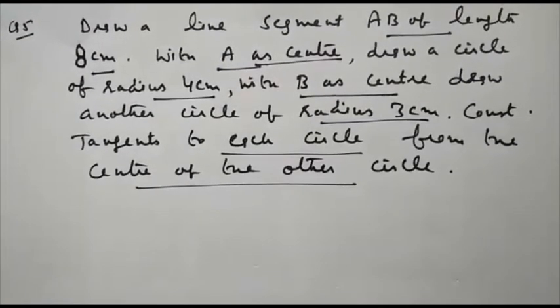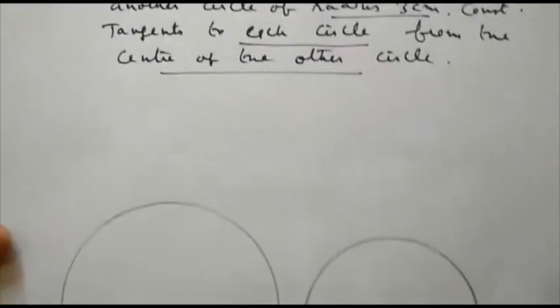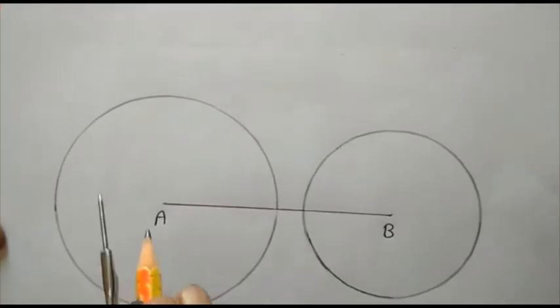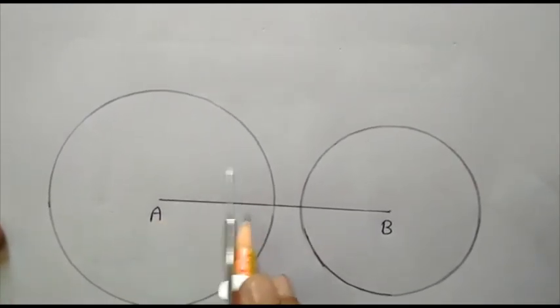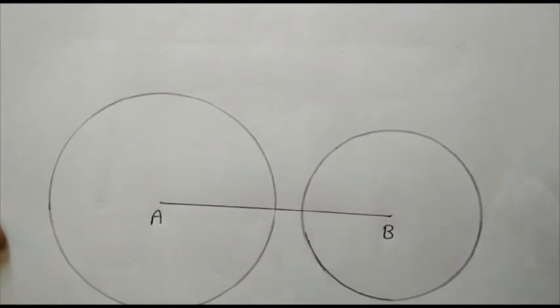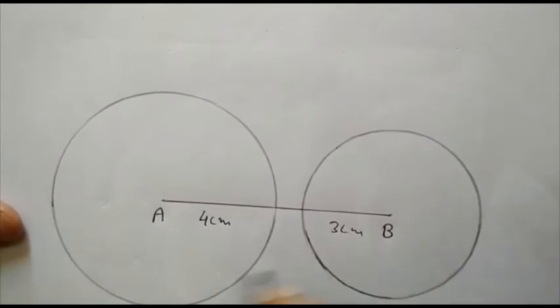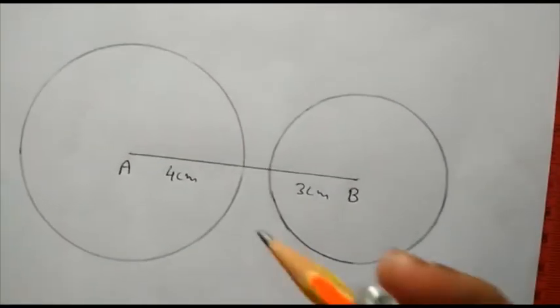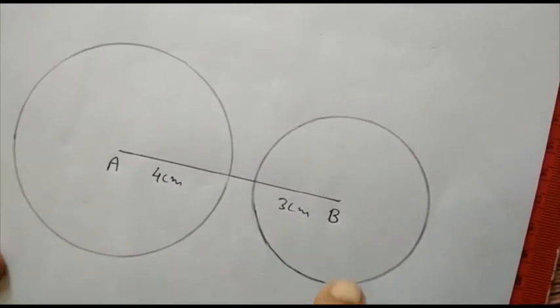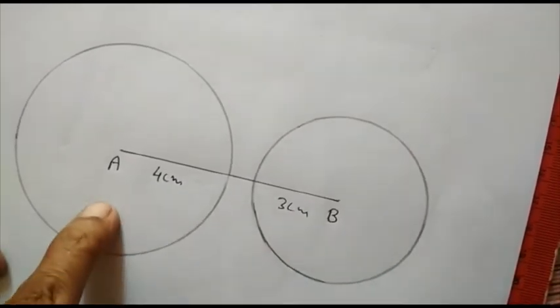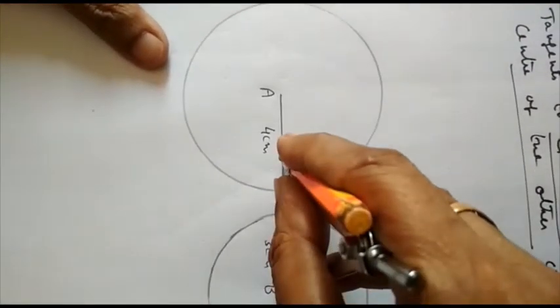Construct tangent to each circle from the center of the other circle. So in this construction, this is a line segment AB of length 8. This is a circle with radius 4 cm and this is a circle with radius 3 cm. So I will draw tangent on this circle from point B and tangent on this circle from point A. So I will draw perpendicular bisector of AB.